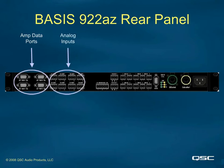If the Basis has analog inputs — and not all of them do — there will usually be Phoenix, also known as EuroBlock connectors, though one model has XLR connectors. These balanced connectors present up to eight separate analog signals to the internal DSP for processing. There is no direct correlation between the analog inputs and the data ports — any input can be sent to any data port, and the inputs could also be sent to the CobraNet output. Incoming CobraNet signals could be routed to the data ports, completely bypassing the analog inputs, or any combination of these can be set up and stored as different configs.